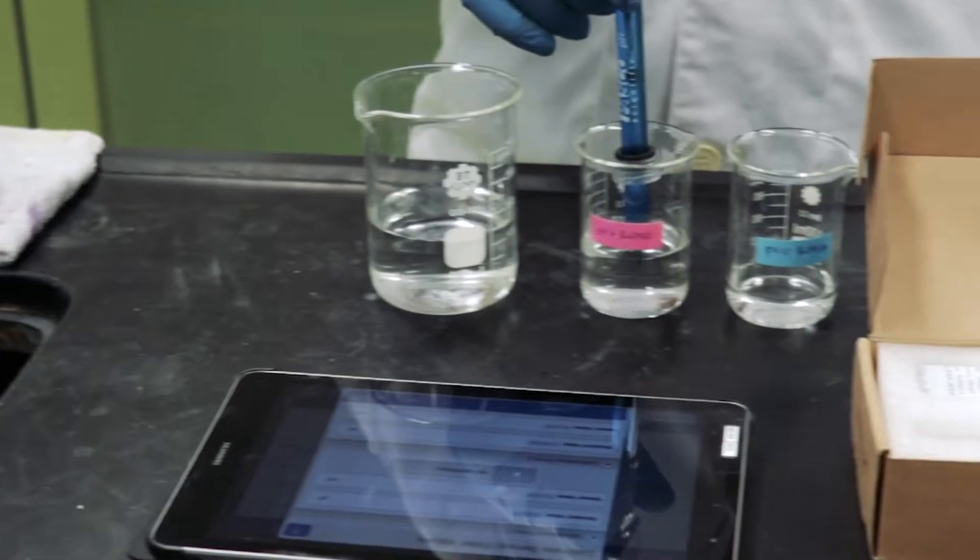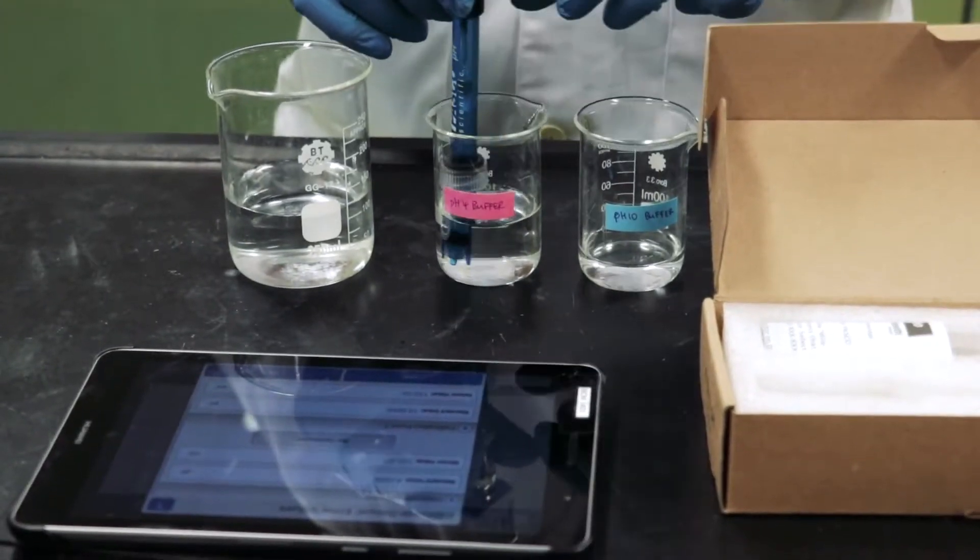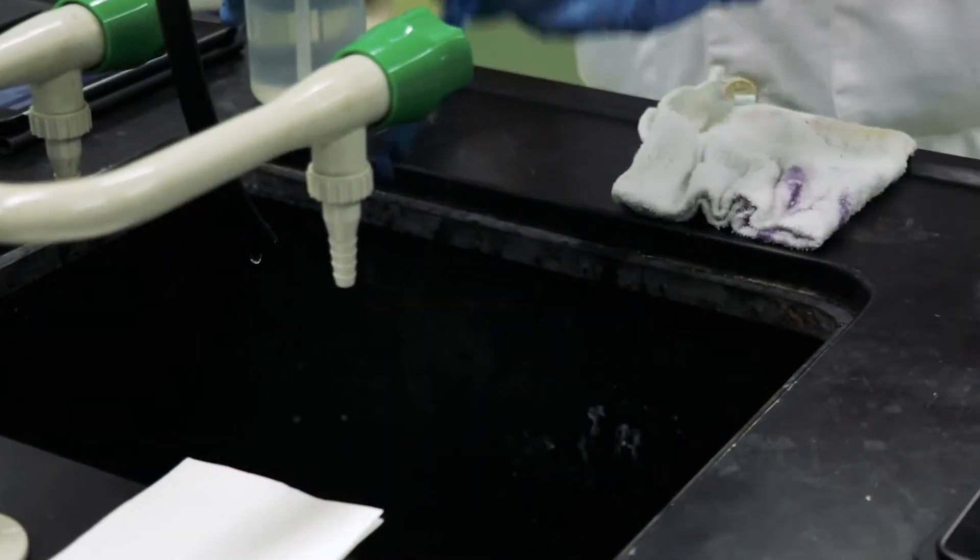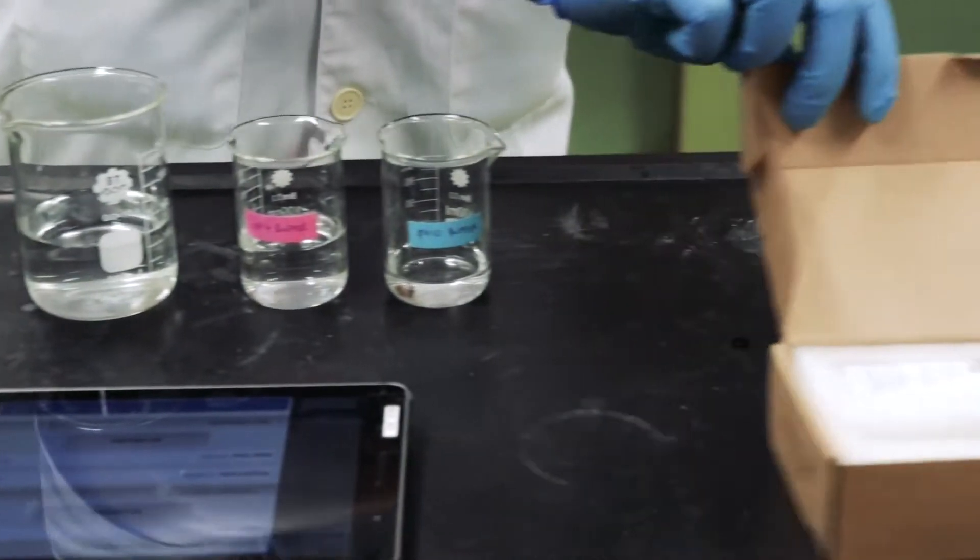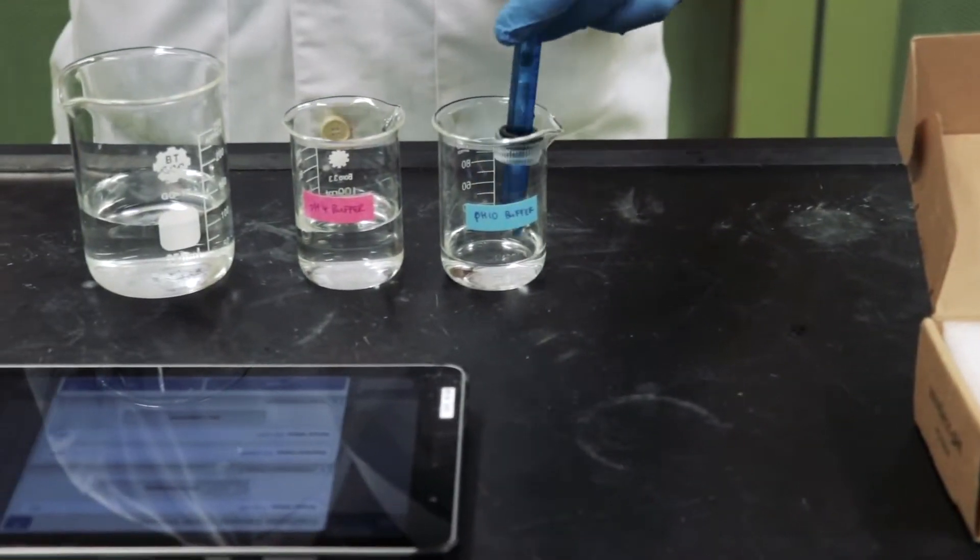For each standard PH value of 4 and 10, immerse the PH Probe in the respective standard solutions for about 30 seconds and press Set Calibration.